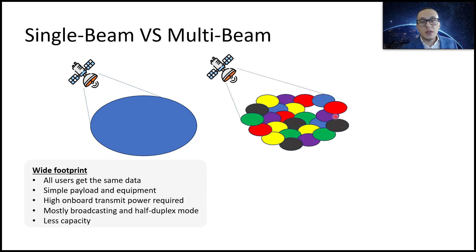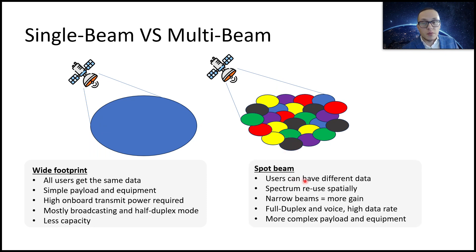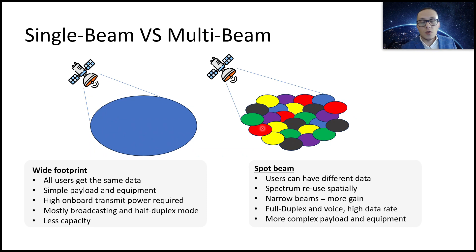With a multi-beam satellite footprint that can transmit multiple beams with different cell IDs, users can receive different data in each beam, and spectrum can be reused more effectively. Beams are more narrow, so the same transmit gain can be used more efficiently. Full duplex and voice services are also available, and high data rate services are possible. However, the equipment and overall system complexity is higher.